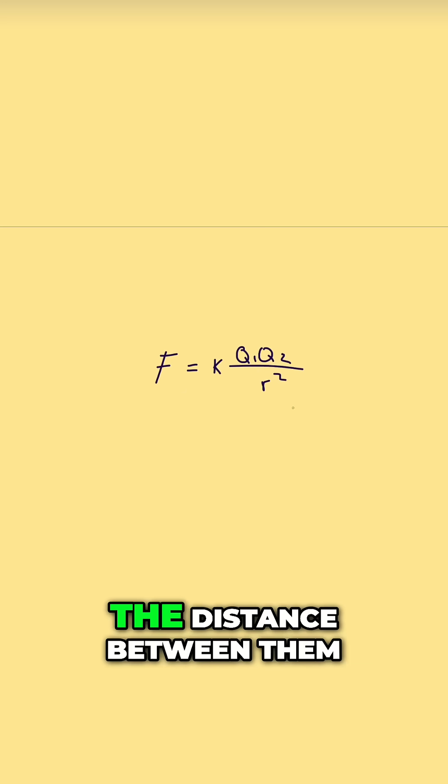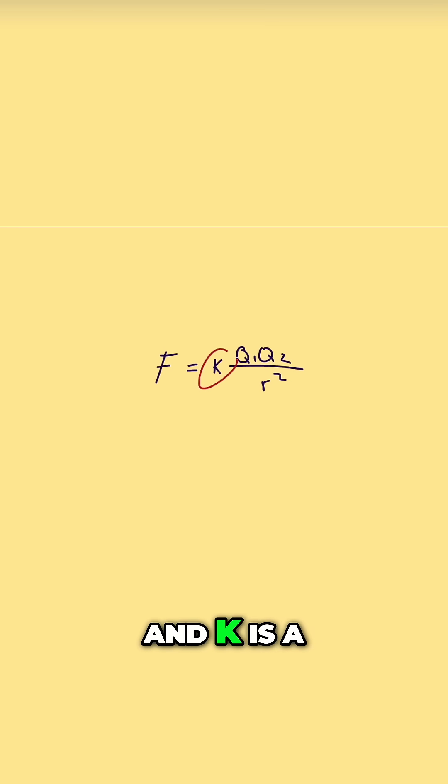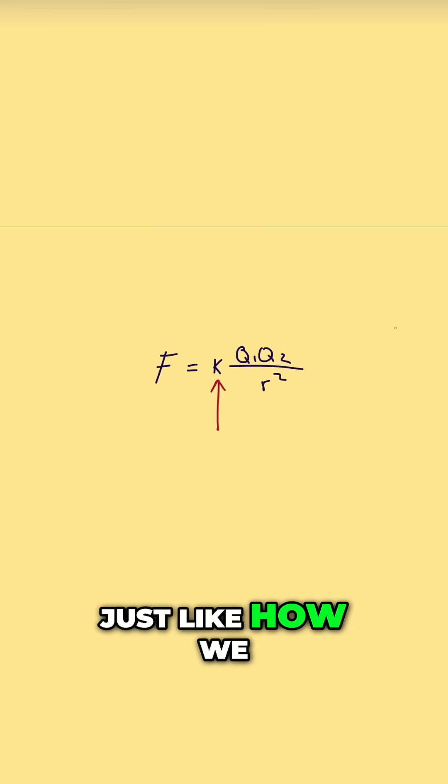R is the distance between them and K is the special constant, just like how we have the gravitational constant or the heat constant.